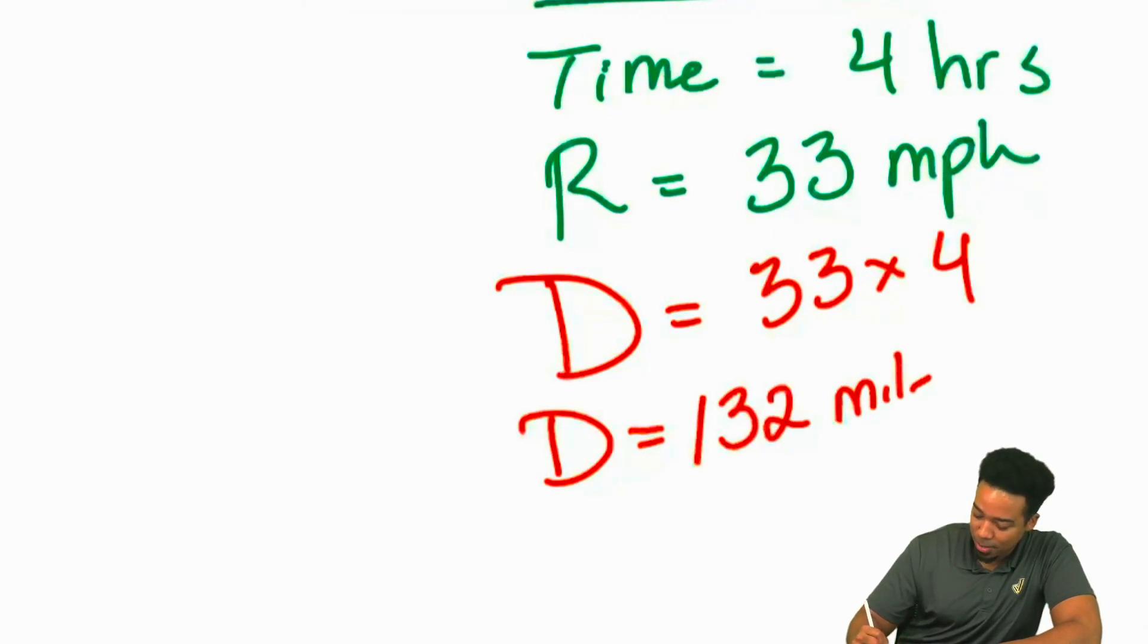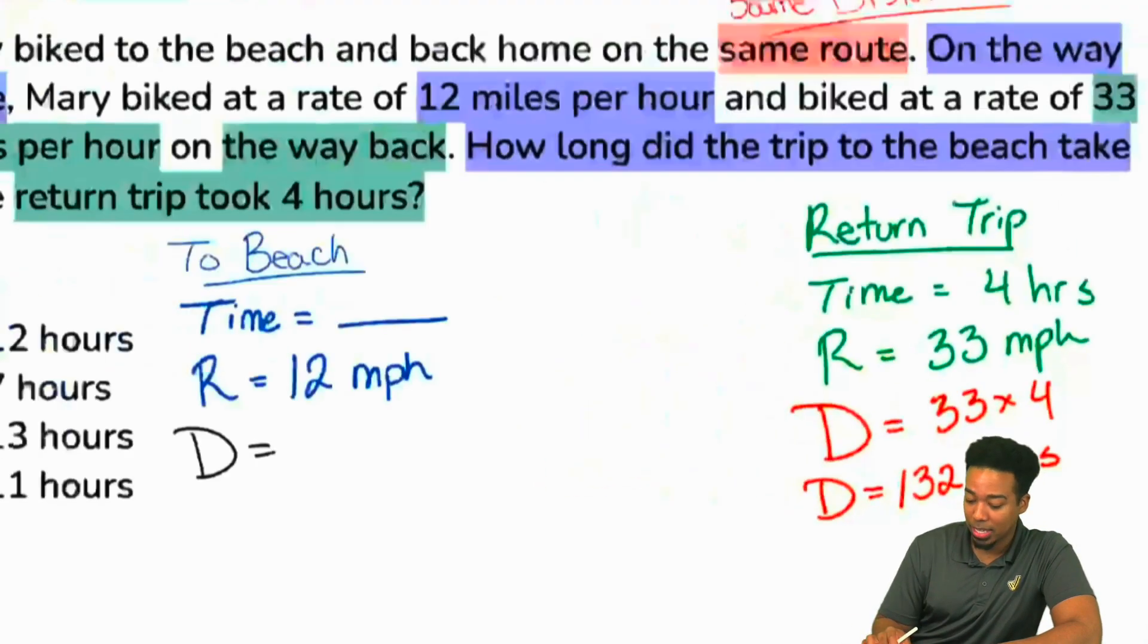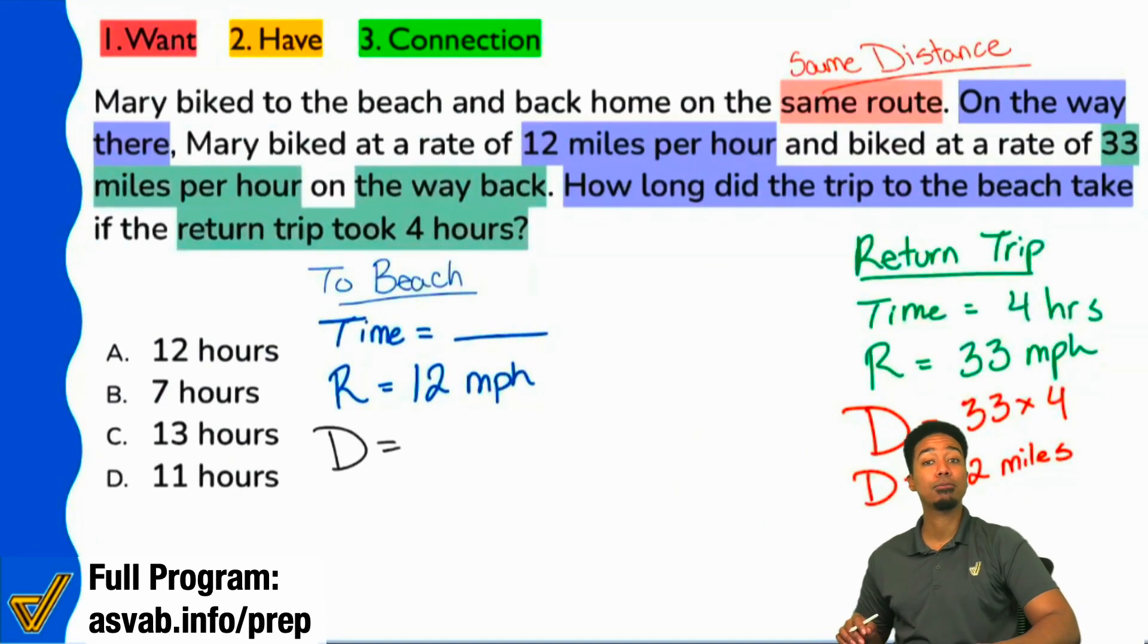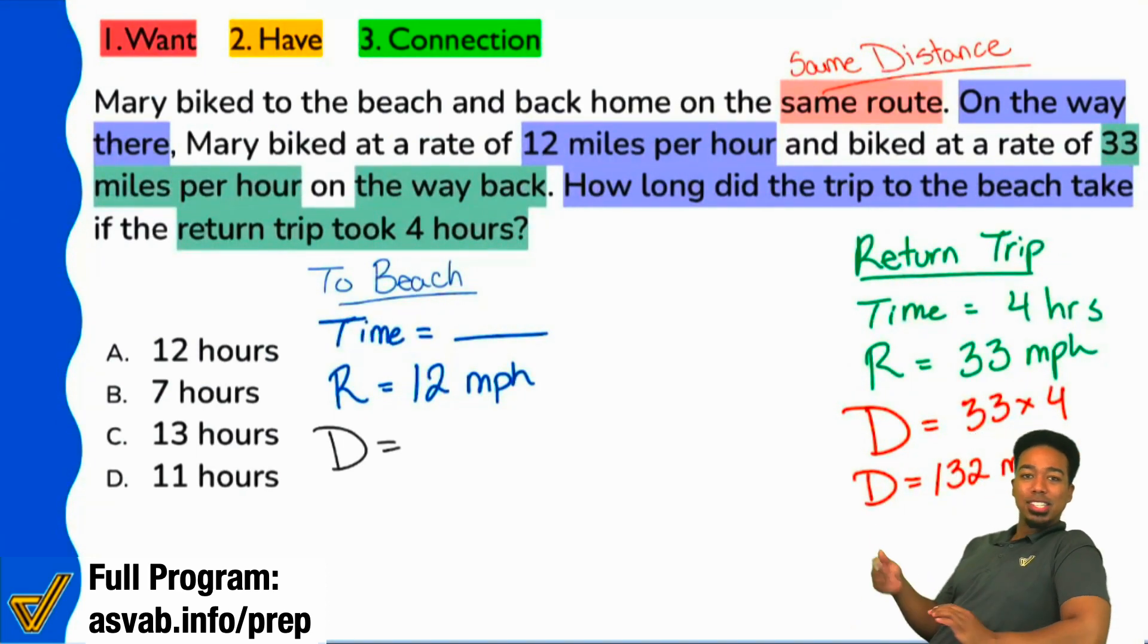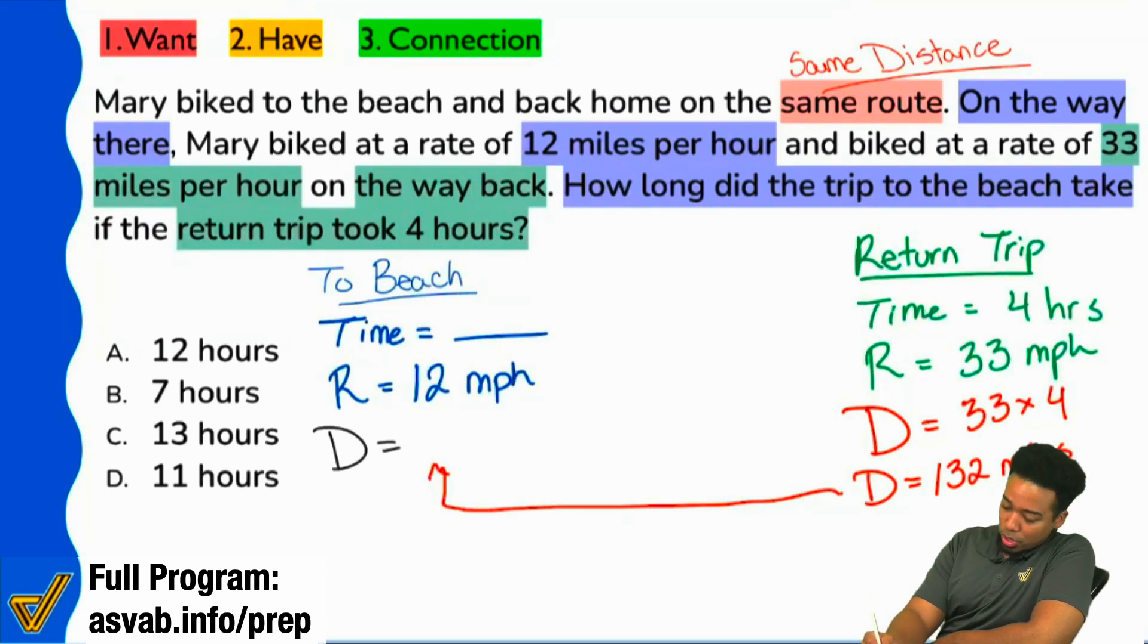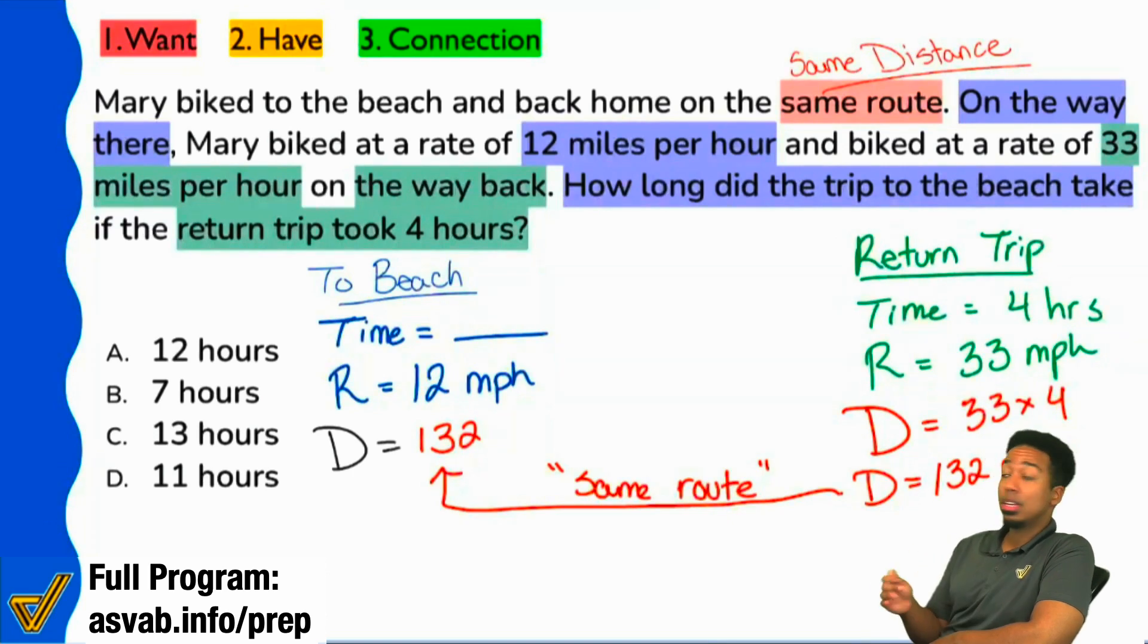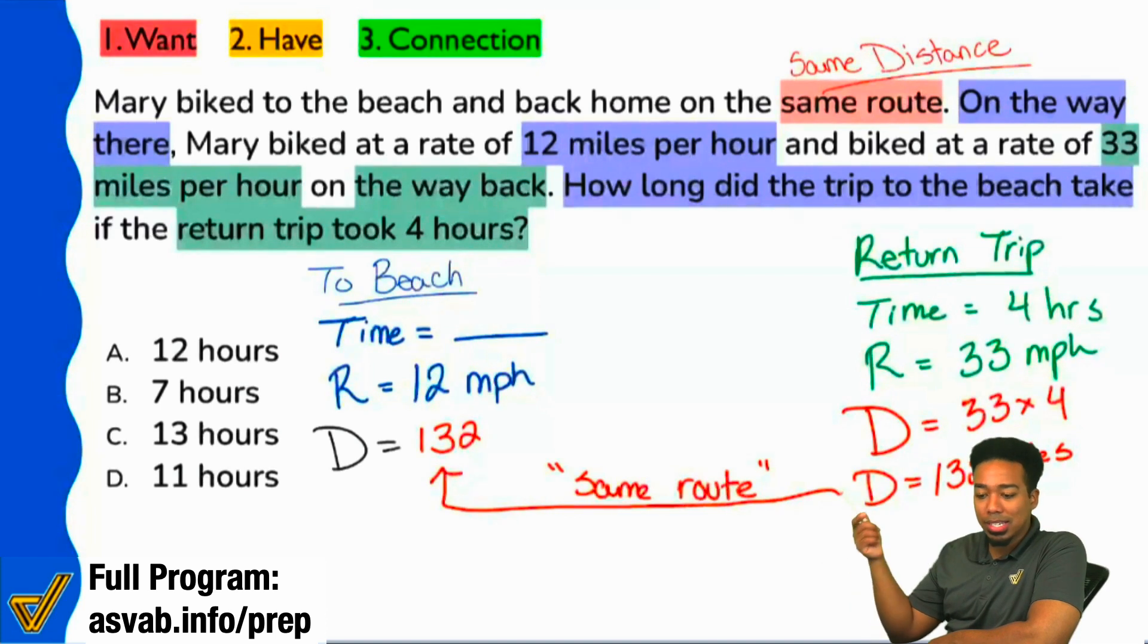132 miles. Now, don't ask Mary why she's biking 132 miles to the beach. Y'all have asked me that before. I still don't have an answer even though I made this problem. So, we have this distance here of 132 miles and so what this means is that this distance over here is 132 miles. Again, same route. That's what that means. Once we found the distance back home, that's the same distance to the beach.